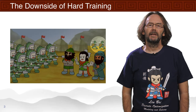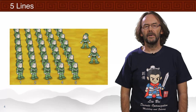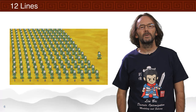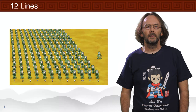They line them up in rows of five, and they have two left over. They line them up in rows of seven, and they also have two left over. And they line them up in rows of twelve, and they have one left over. So how many soldiers do they have?